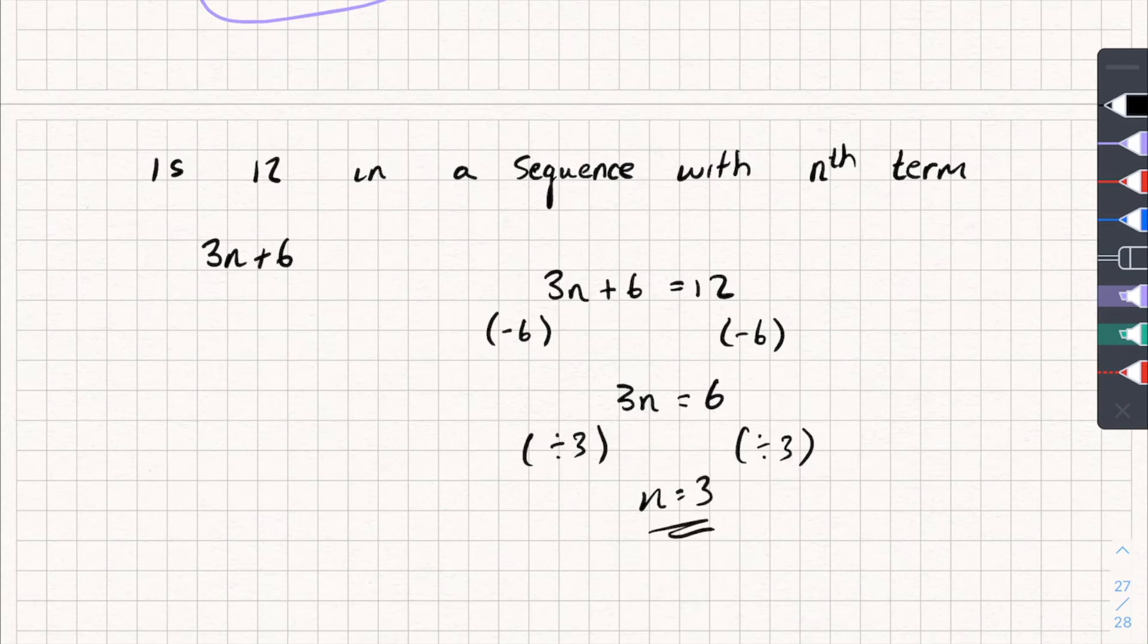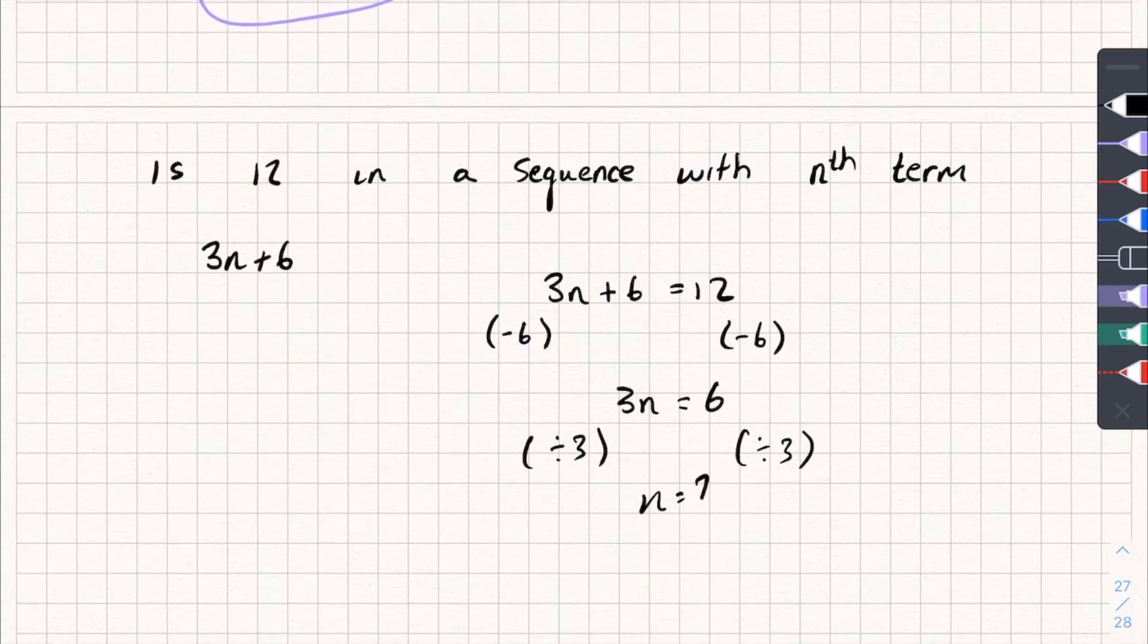Now, why does it help me if I know n is equal to 3? Oh, sorry, that's not right, is it? I should have n is equal to 2. Now, why does this help me, though, know if it's in the sequence if n is equal to 2?